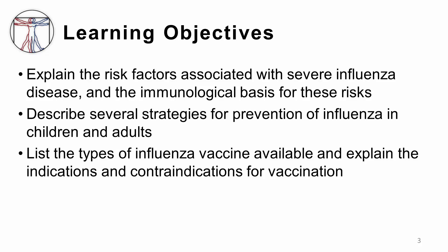By the end of this lesson, you should be able to explain the risk factors associated with severe influenza disease, as well as the immunological basis of these risks. You should be able to describe several strategies for prevention of influenza in adults and children, and list the types of influenza vaccine available and explain the indications and contraindications for influenza vaccination.